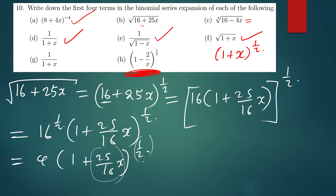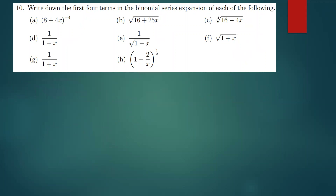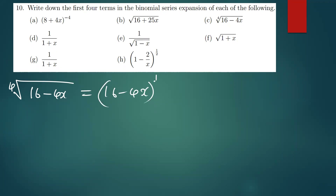The same applies to part C. The fourth root of (16 minus 4x) is simply (16 - 4x) to the power 1 over 4. This can be simplified by factorizing 16 so that we get (1 - 4/16 x) to the power 1 over 4.